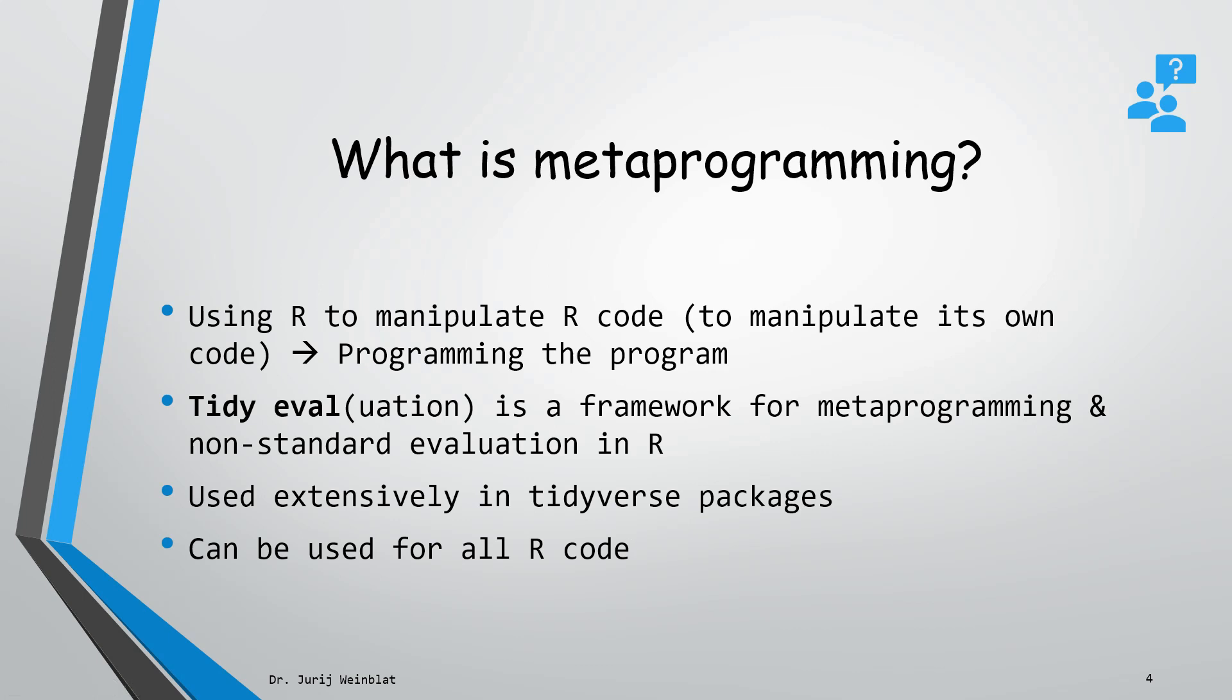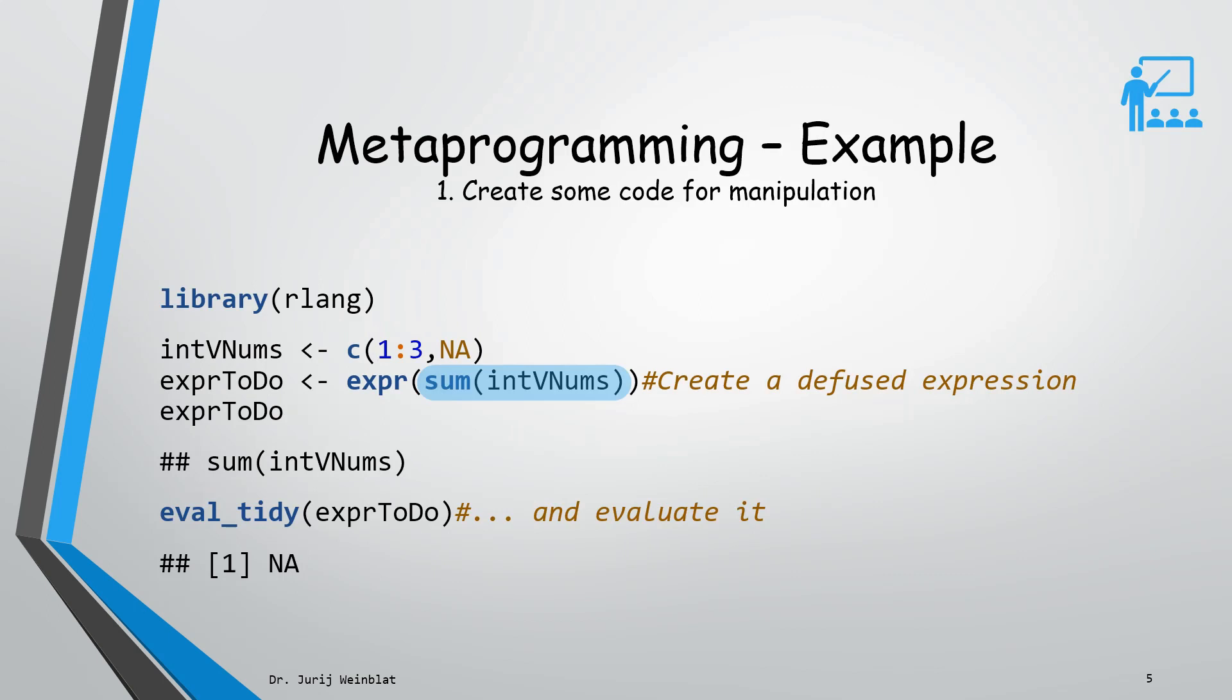Let's start with an example so you get an understanding of what metaprogramming is. On this slide I'll show you code for how to create and capture it. First we need to load the library rlang, which loads the framework for metaprogramming. Then we create a vector containing numbers one to three and an NA as the fourth element.